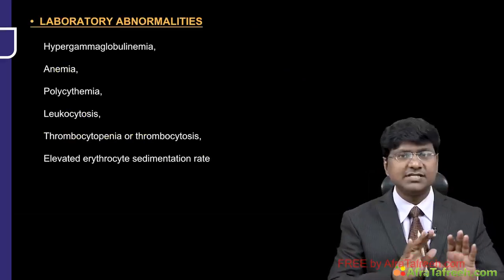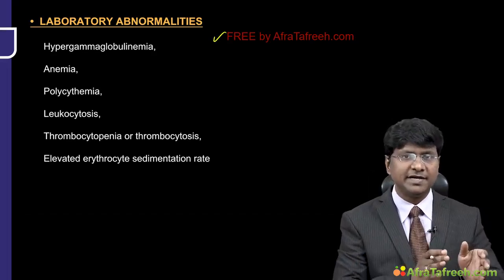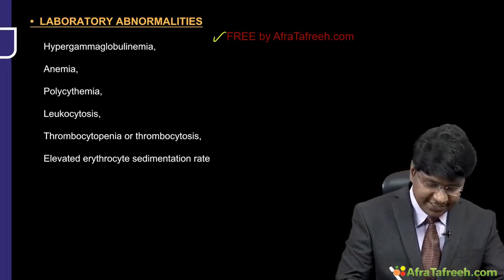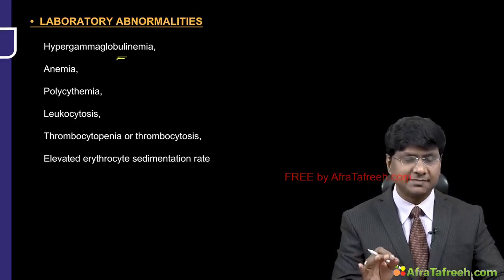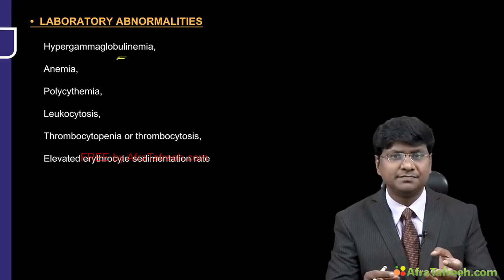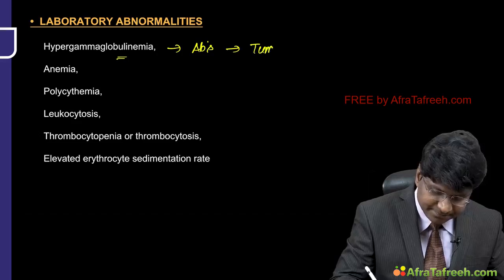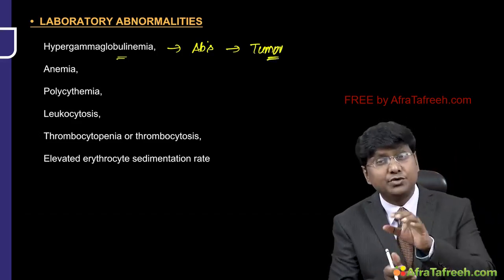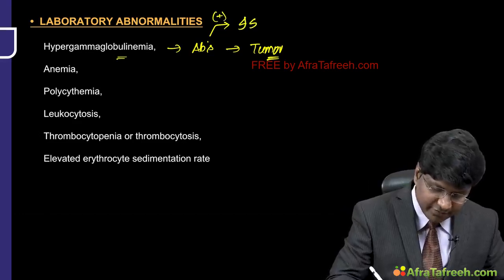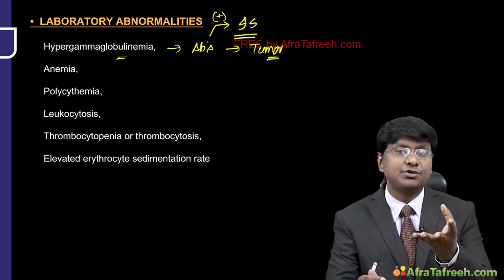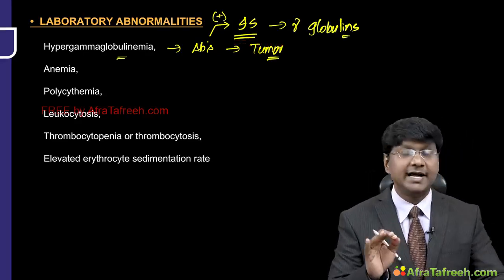Laboratory findings in patients with atrial myxoma include hyper-gamma globulinemia. These tumors can stimulate the immune system — the tumor induces production of specific antibodies against tumor cells, which further stimulate the immune system, leading to increased production of gamma globulins and resulting in hyper-gamma globulinemia.